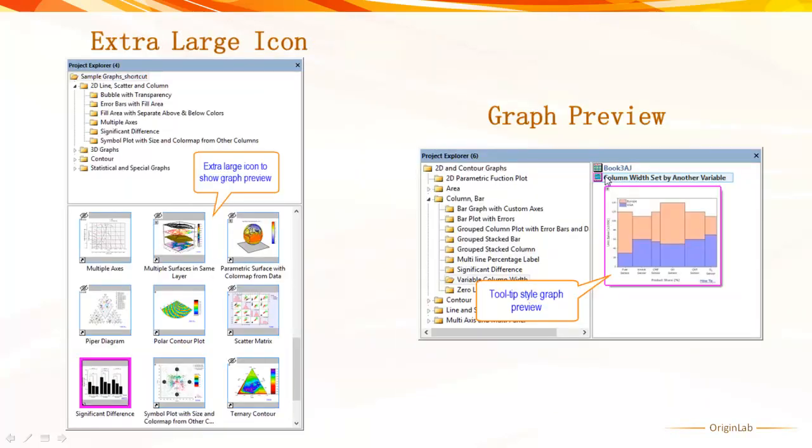Graph previews is a popular request from our users. Searching for a particular graph used to involve opening numerous windows in the workspace and can be time-consuming, especially with complex graphs involving large amounts of data. In Origin 2015, the last drawn image of a graph is cached as the graph preview.